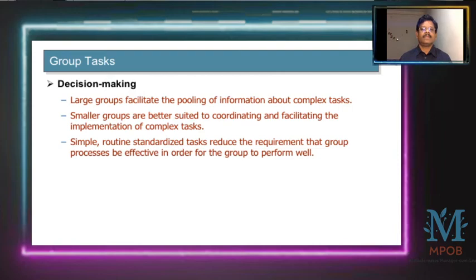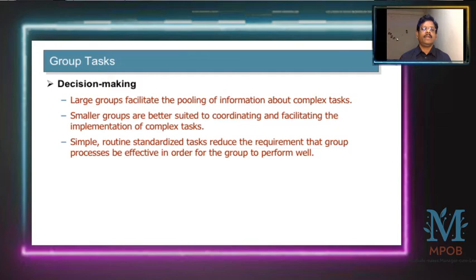Decision making in larger groups facilitates the pooling of information about complex tasks. Smaller groups are better suited to coordinating and facilitating the implementation of complex tasks. Simple, routine, and standardized tasks reduce the requirement for groups to process information effectively for the group to perform well. So the decision making process and effectiveness varies with the size of the group — larger and small — and it also depends on the tasks.